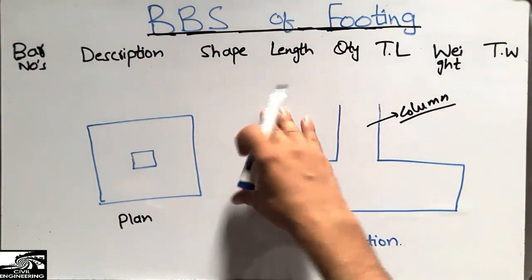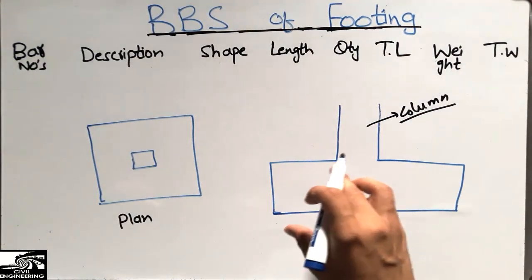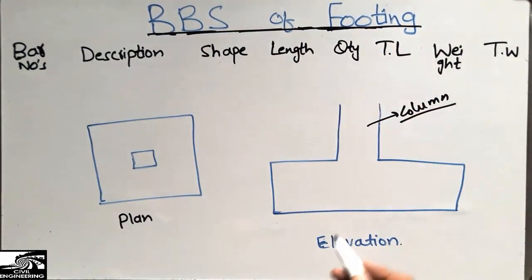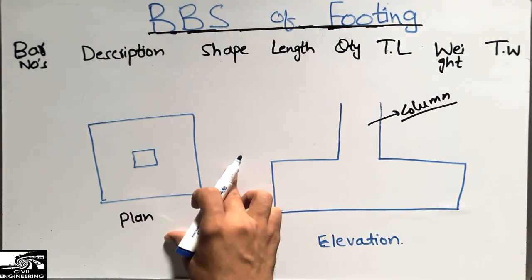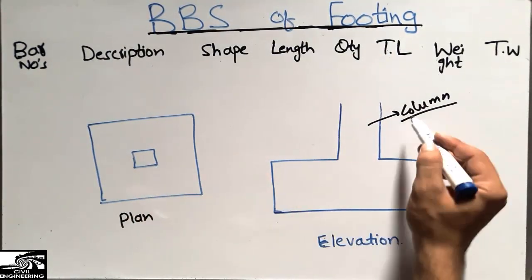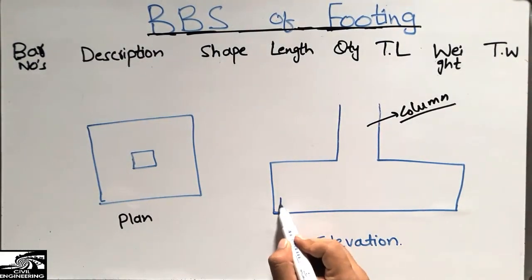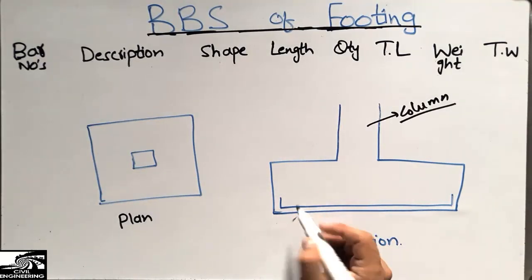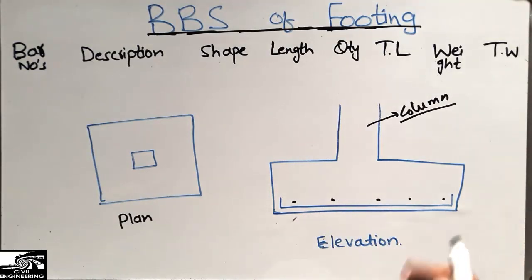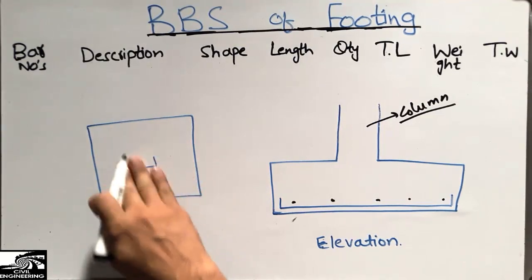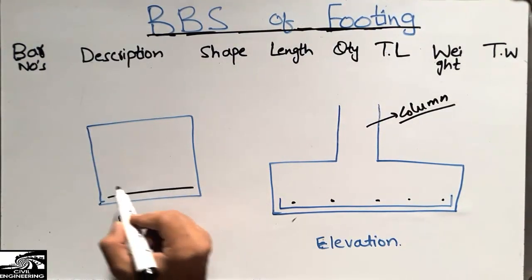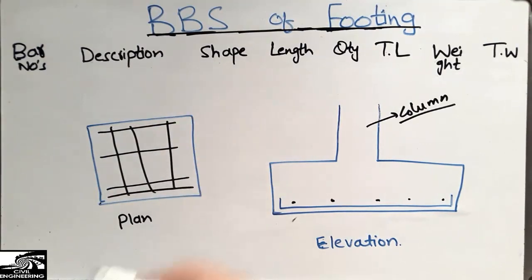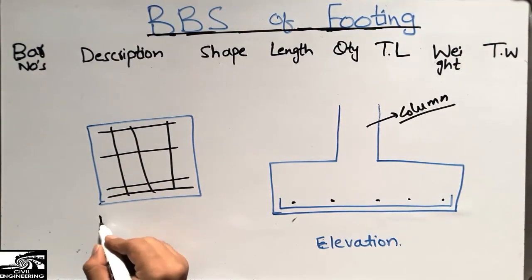Now you have watched the 3D view of the footing — how the reinforcement is placed, the main reinforcement and the distribution reinforcement. This is the elevation of the footing and this is the plan of the footing. This shows the column in the plan and in the elevated section. The main reinforcement is placed in one direction and the distribution reinforcement in the other direction. The plan dimensions are 12 foot and 15 foot.